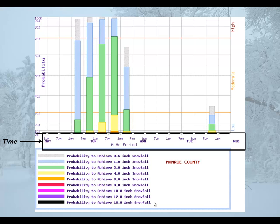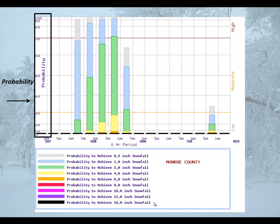On the left-hand axis is the probability value, increasing from zero on the bottom to 100 percent on the top. Your most probable snow amounts will be found toward the top of this graphic and the less likely amounts near the bottom.